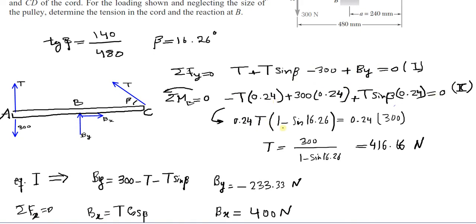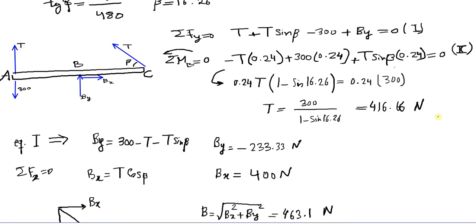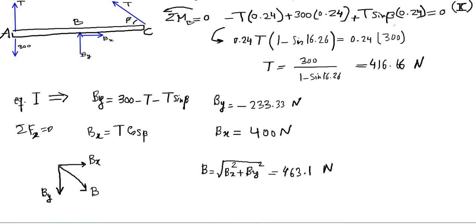From the moment equation, the tension T equals 300 divided by (1 minus sin(β)), which gives T equals 416.66 Newtons. Substituting into Equation 1, By equals 300 minus T minus T·sin(β), which gives By equals negative 233.33 Newtons.